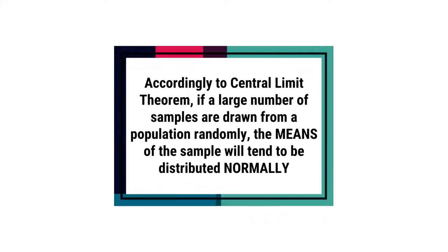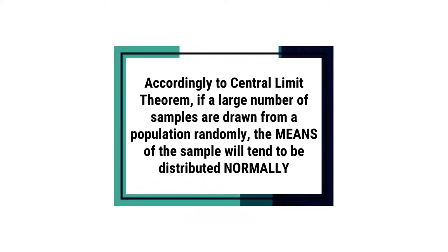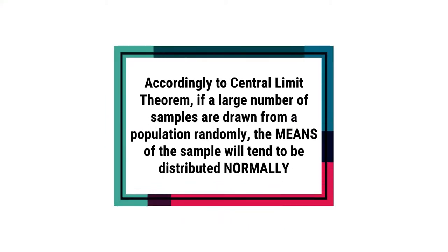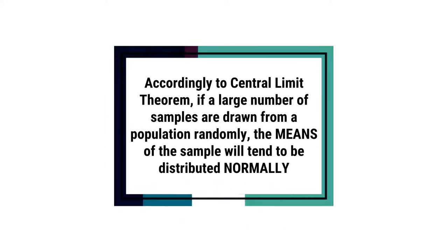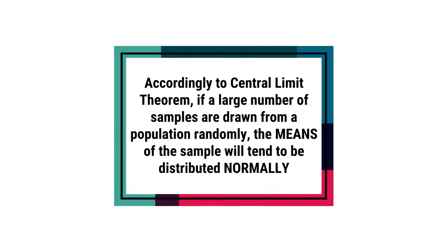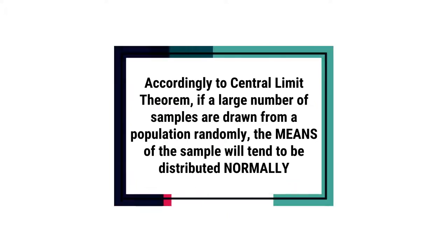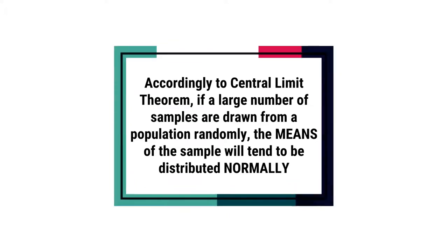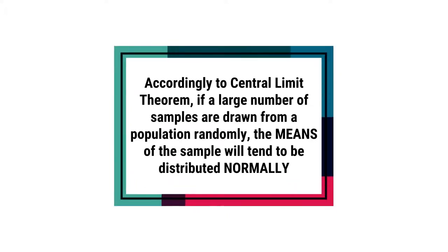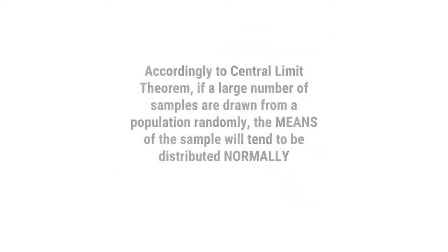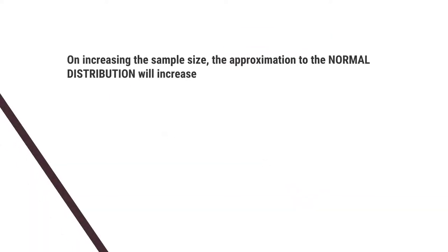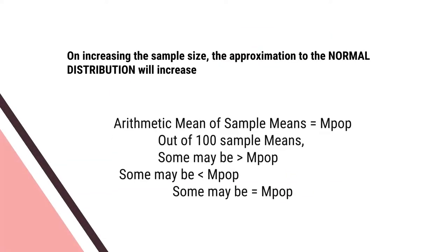According to the central limit theorem, if a large number of samples are drawn randomly from the population, the mean of the samples will tend to distribute normally. On increasing the size of the sample, the approximation to the normal distribution increases.